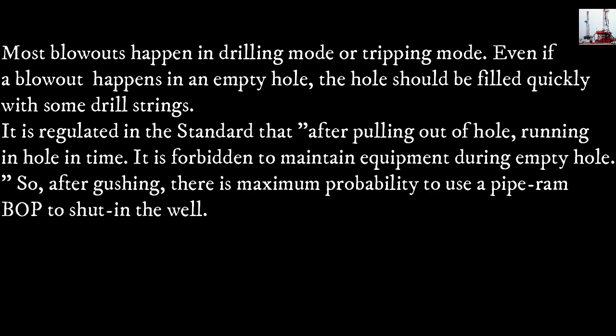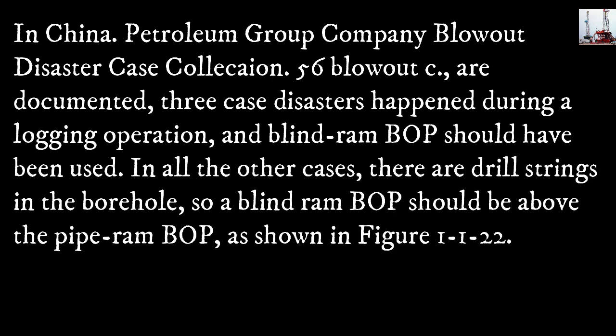Most blowouts happen in drilling mode or tripping mode. Even if a blowout happens in an empty hole, the hole should be filled quickly with drill strings. It is regulated in the standard that after pulling out of hole, running in hole should occur in time, and it is forbidden to maintain equipment during an empty hole. After gushing, there is maximum probability of using a pipe ram BOP to shut in the well. In China, the petroleum group company blowout disaster case collection documents 56 blowout cases; only 3 disasters happened during logging operations where a blind ram BOP should have been used. In all other cases, drill strings were in the borehole, so a blind ram BOP should be above the pipe ram BOP, as shown in Figure 1122.